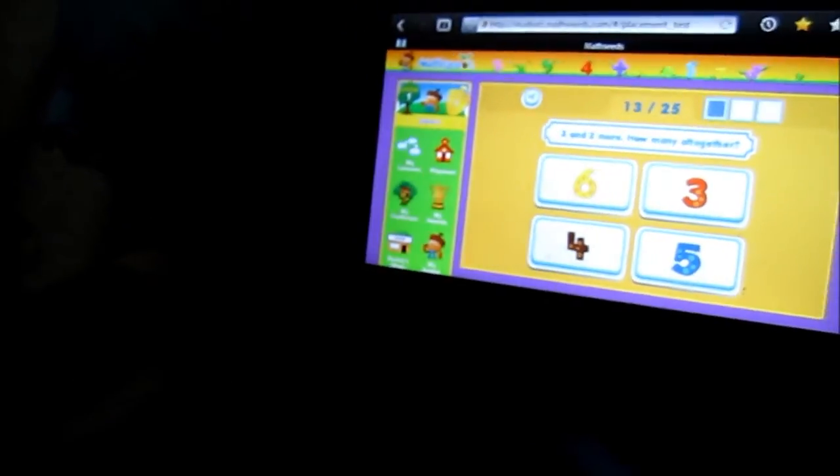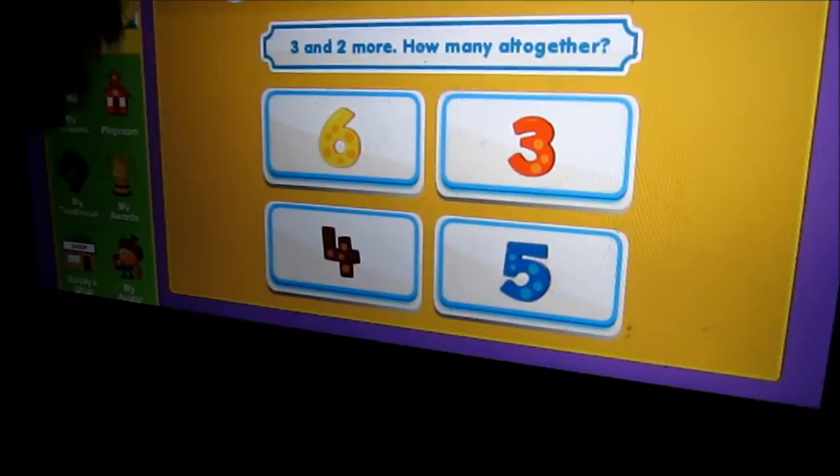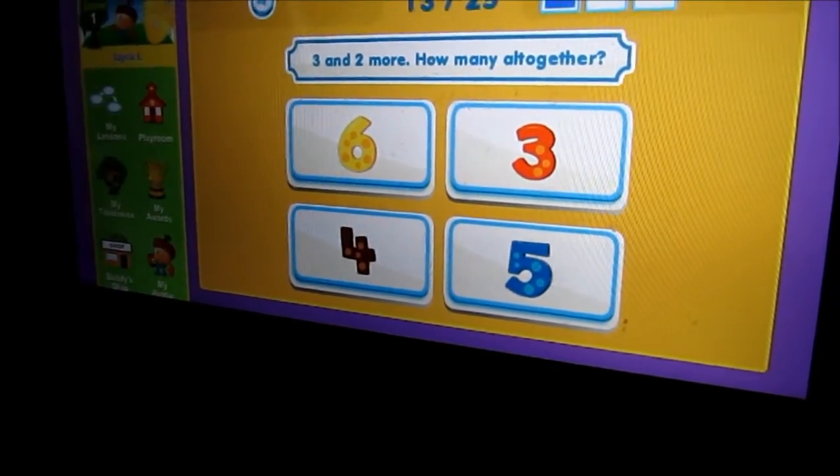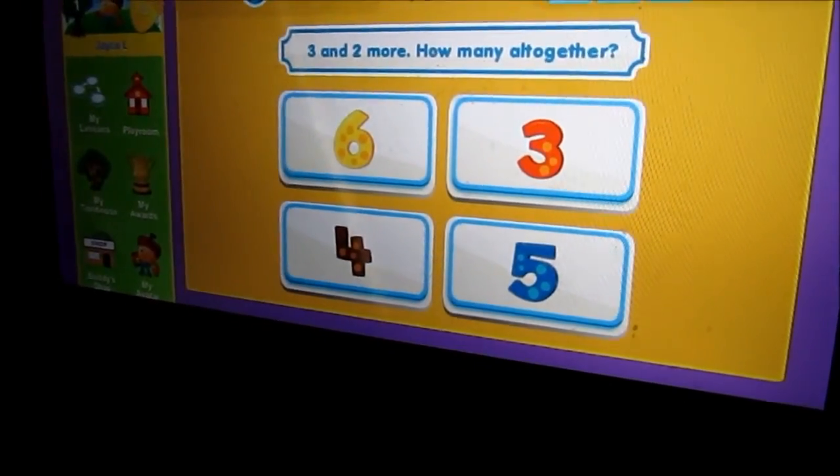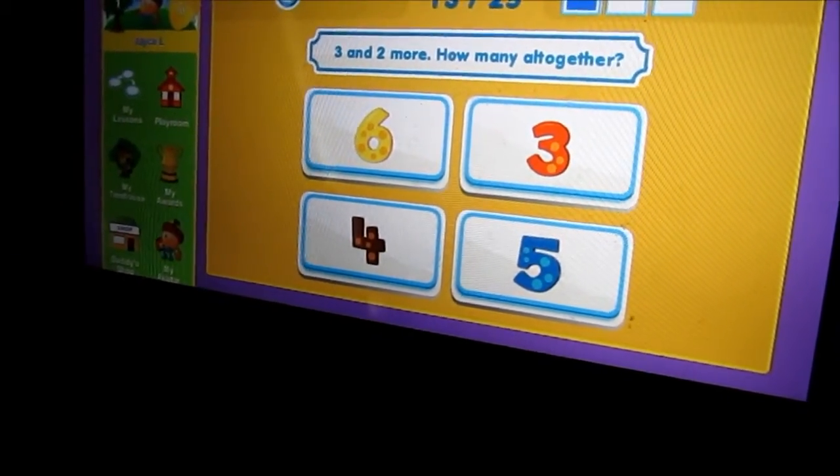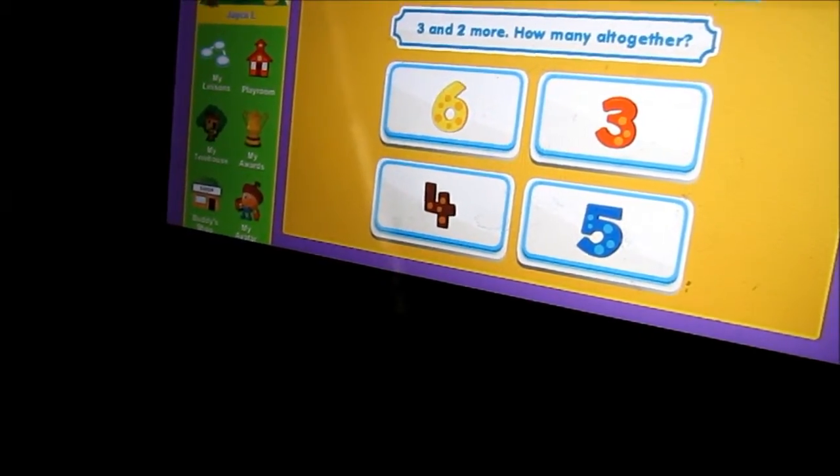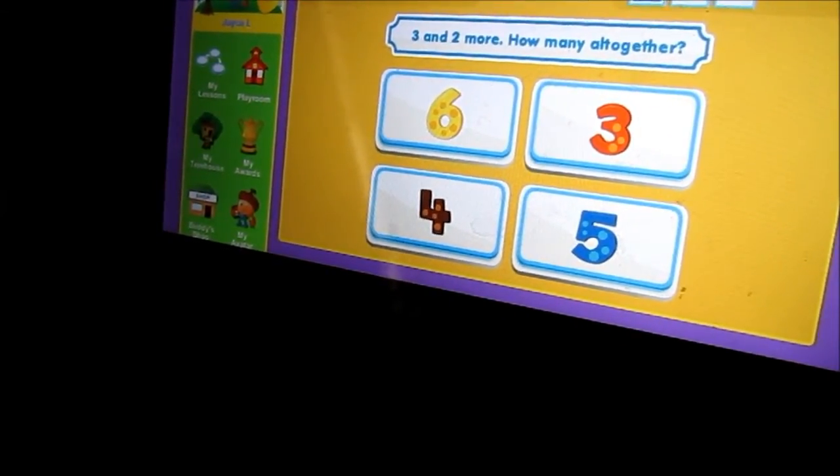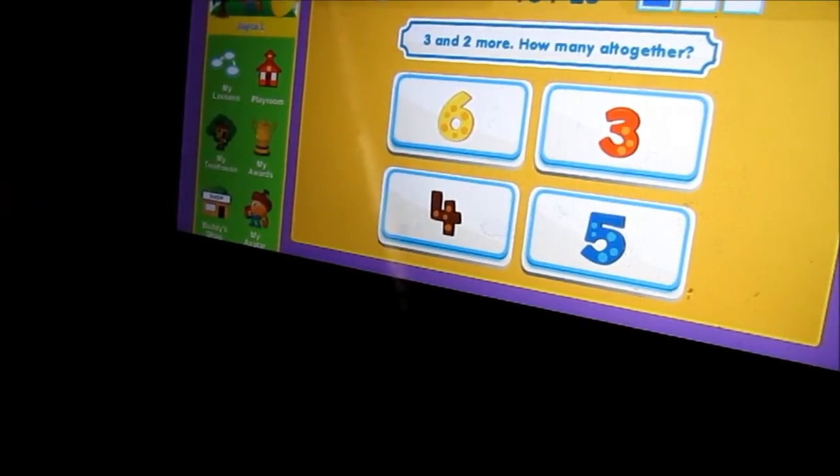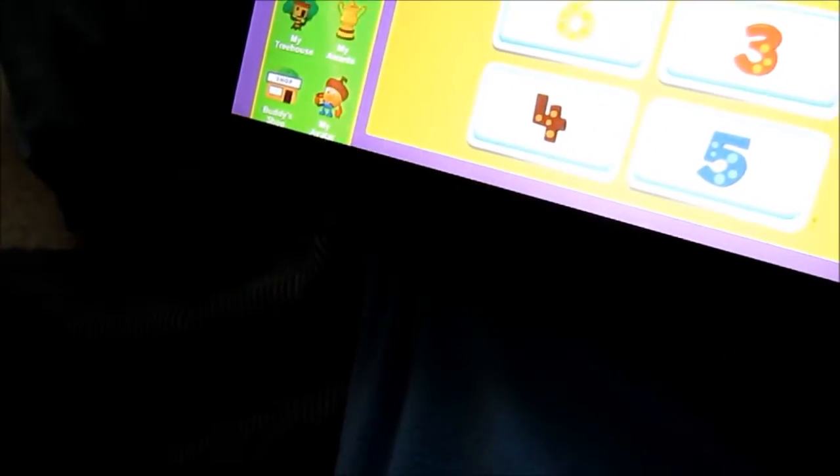Three and two more. How many all together? So if you have three, and you have two more, three plus two equal? Four. Five. No. Five. If you have three rocks plus two rocks, how many is equal? Three plus two. One, two, three, four, five. One, two, three. One, two, three.